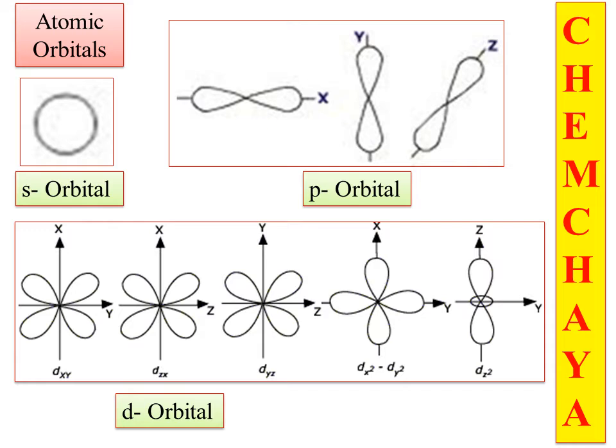In the syllabus, s and p are covered. What does d-orbital mean? It is oriented in five different directions. The three are along the coordinates. These are: dxy, dzx, dyz, dx squared minus dy squared, and dz squared. So we have 5 d-orbitals.